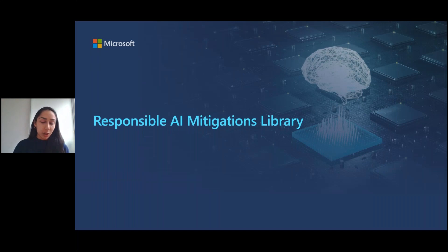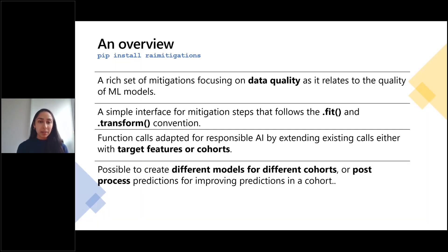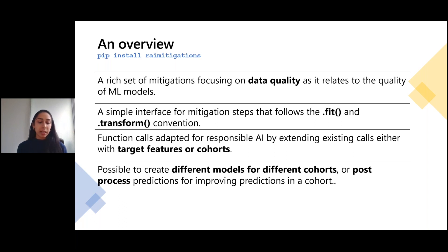The Responsible AI Mitigations Library is a Python library that fits into the process of diagnosing where errors might be happening and making targeted fixes. It brings together a rich set of mitigations focused on data quality to improve ML model performance. Many of these are available in popular libraries like sklearn, but we're bringing them together in one place and providing additional functionality, including a simpler interface using the fit and transform convention.